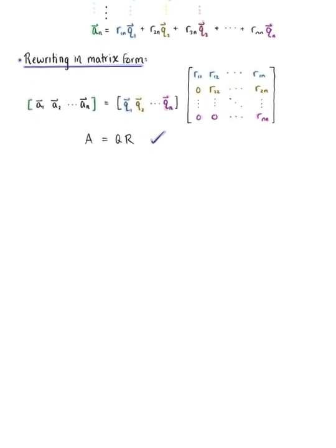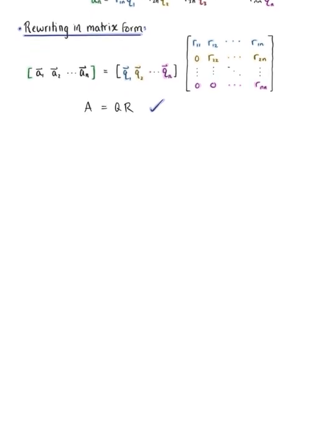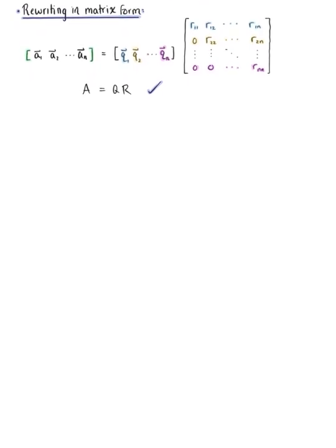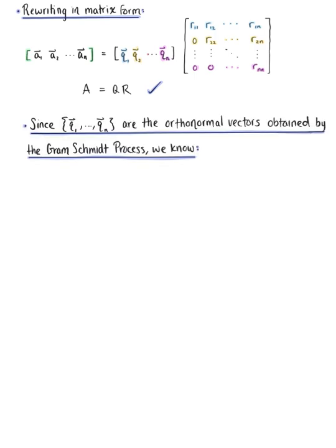Before this proof is officially complete, there are a couple of things we need to verify. The first is: does matrix Q really have orthonormal columns? Since the set of vectors Q sub 1 through Q sub n are orthonormal vectors obtained from the Gram-Schmidt process, then yes, definitely, the columns of matrix Q are orthonormal.